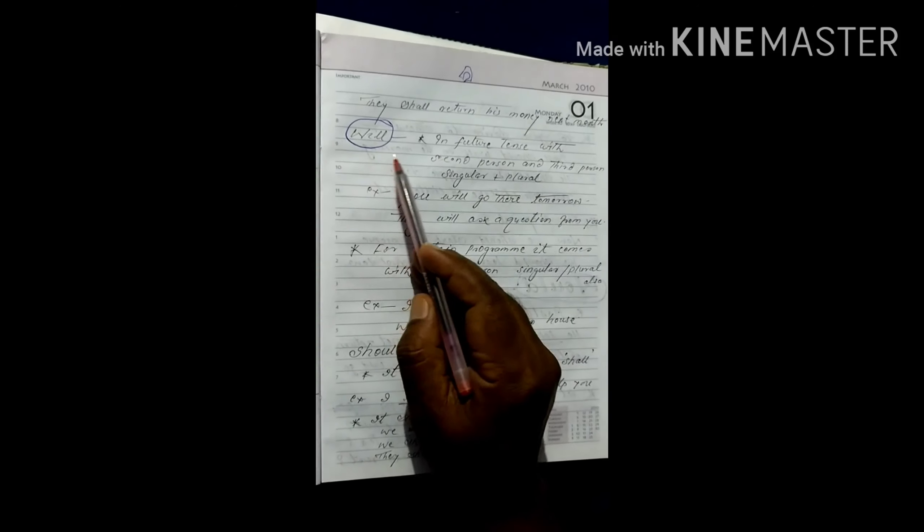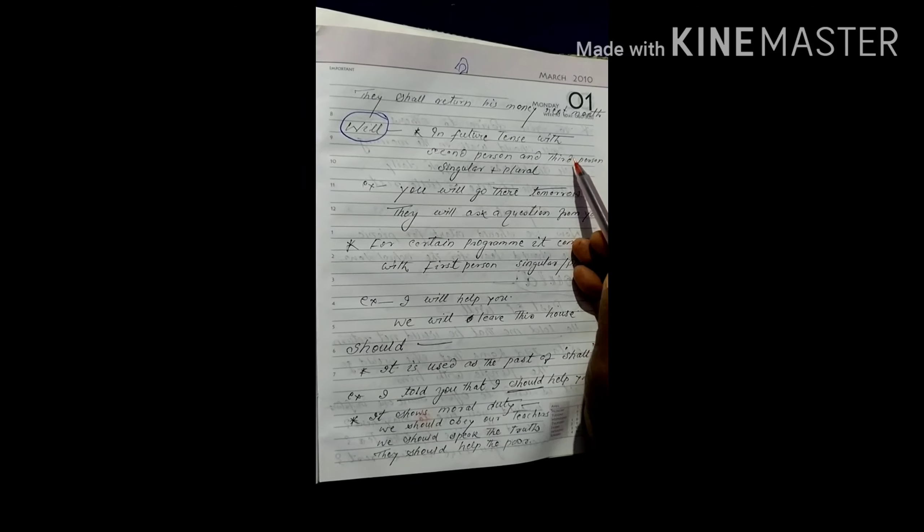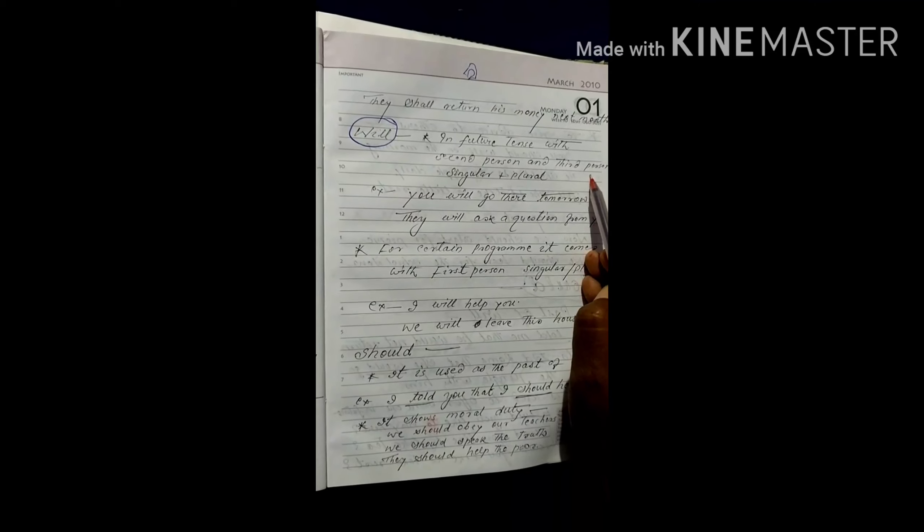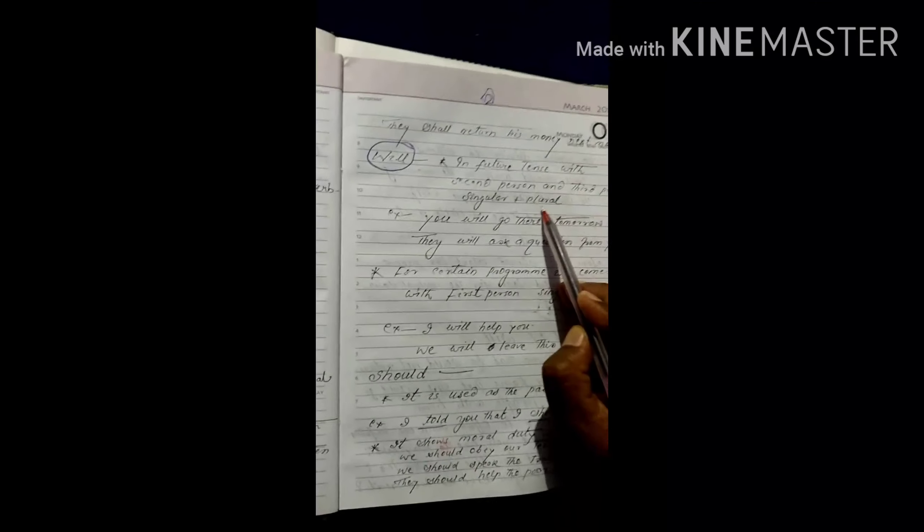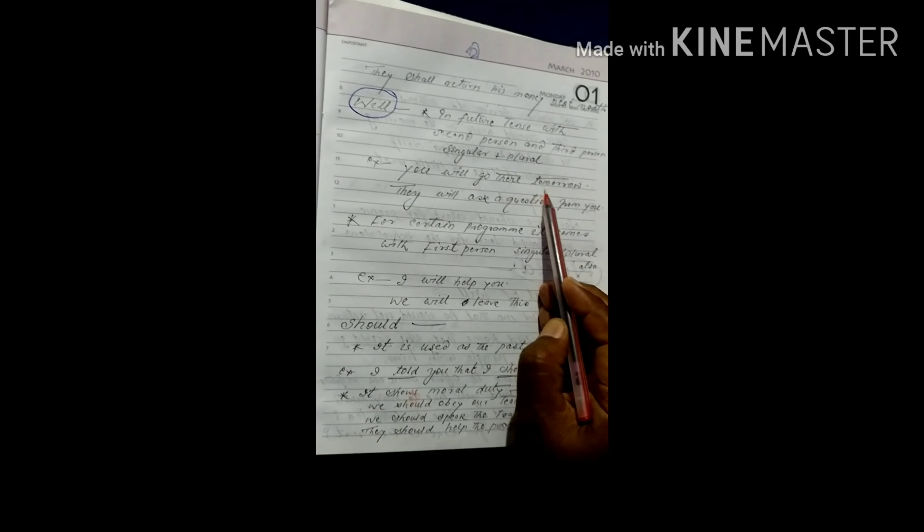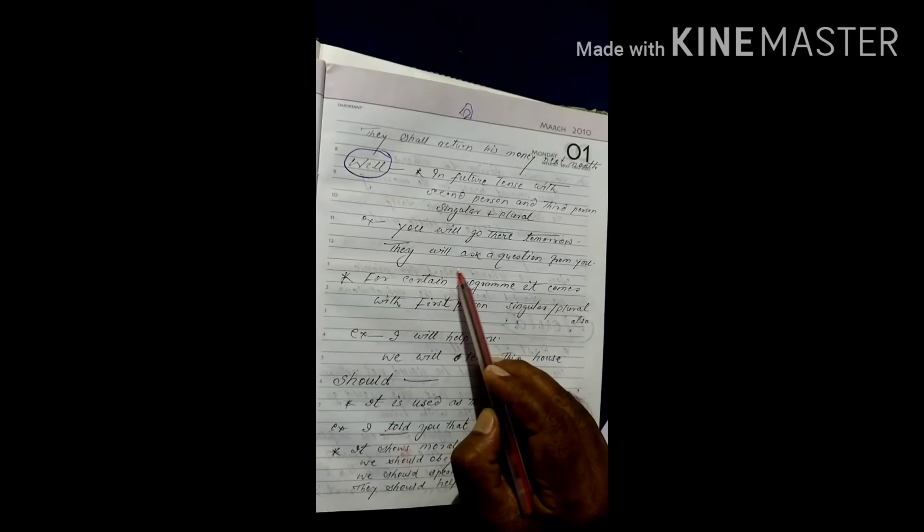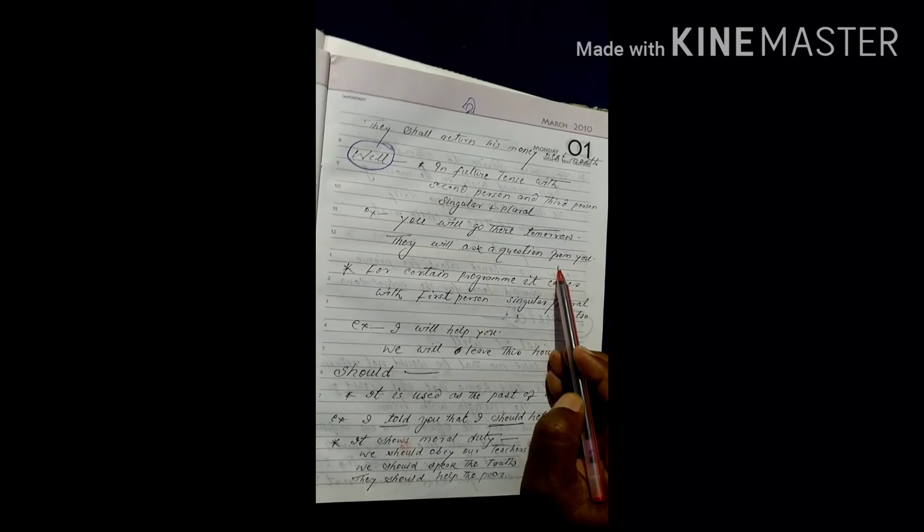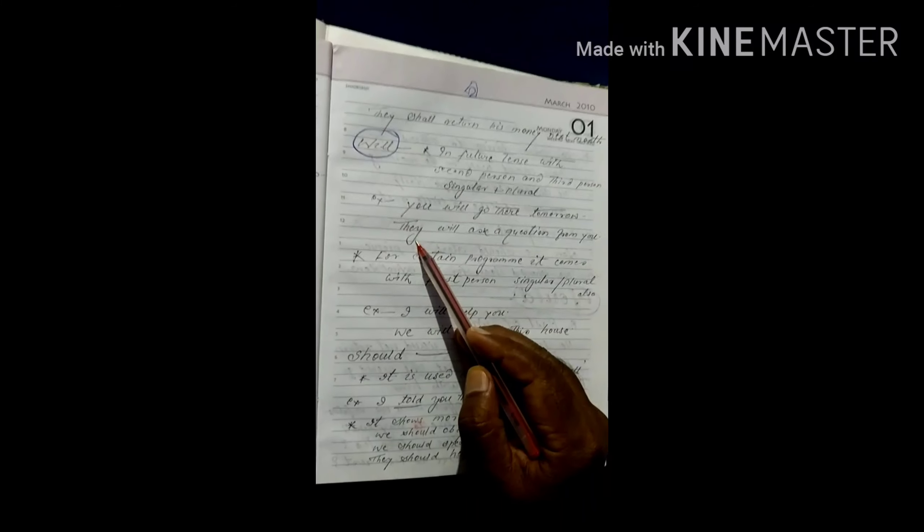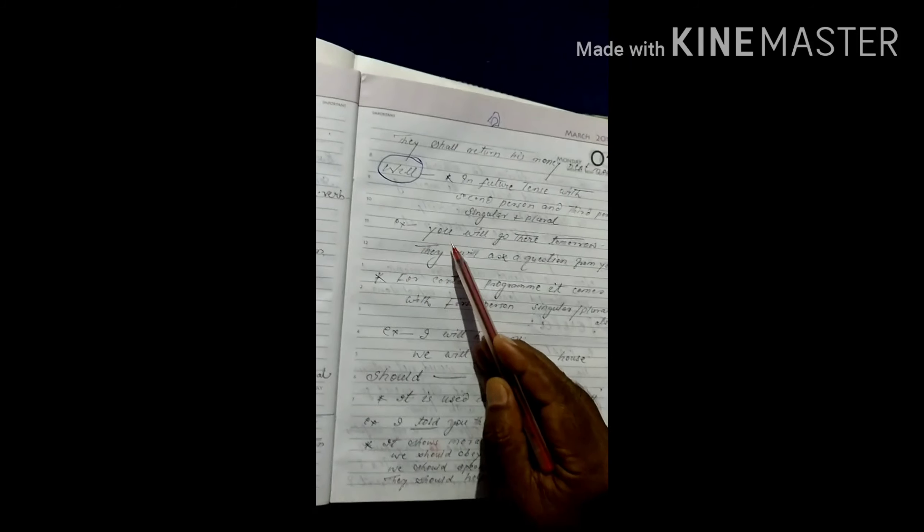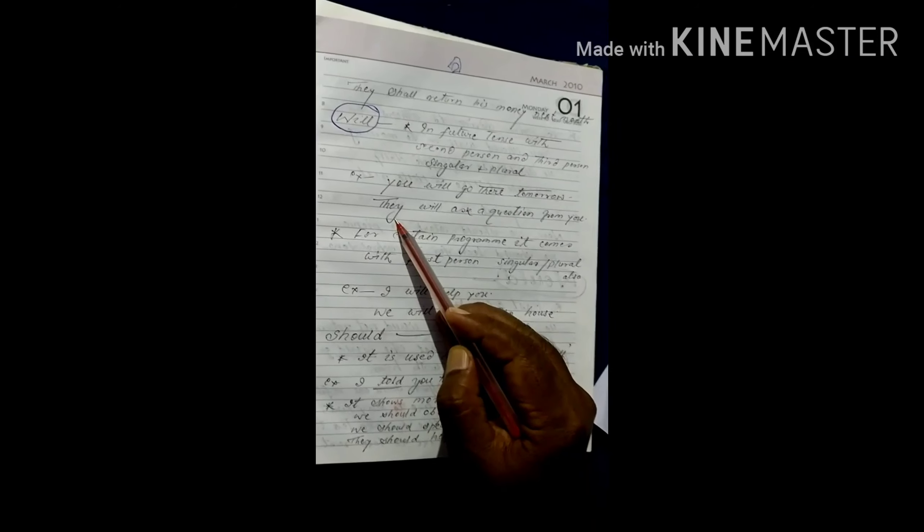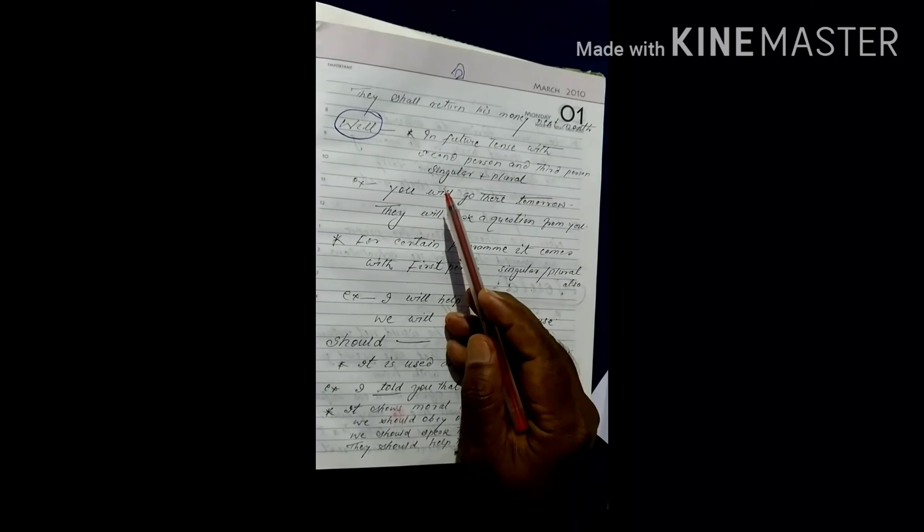Now, come about to will. In future tense, commonly, it is used with second person and third person singular plus plural. For example, you will go there tomorrow. They will ask a question from you. Here is second person you, here is third person they. In common cases, for second person and third person, we use will.